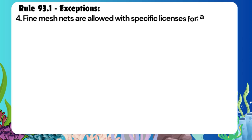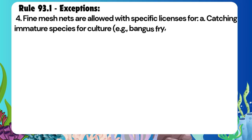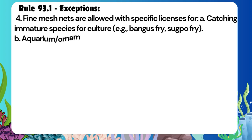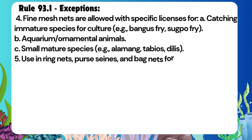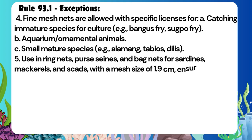Rule 93.1 — Exceptions: Fine Mesh Nets are allowed with specific licenses for: (A) Catching immature species for culture, e.g., bangus fry, sugpo fry; (B) Aquarium or ornamental animals; (C) Small mature species, e.g., alamong, tabios, dilis. Also allowed for use in ring nets, purse seines, and bag nets for sardines, mackerels, and scads, with a mesh size of 1.9 centimeters, ensuring no juvenile fish are caught.